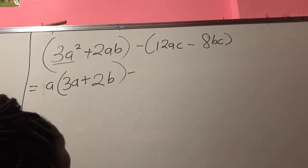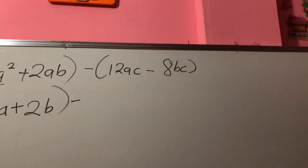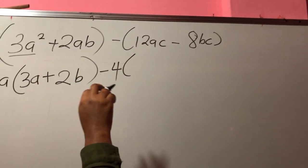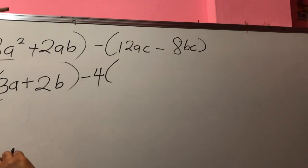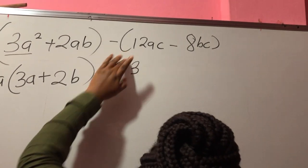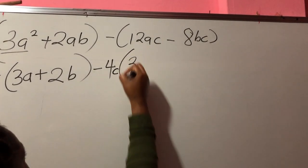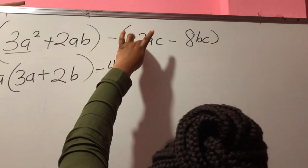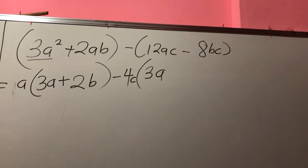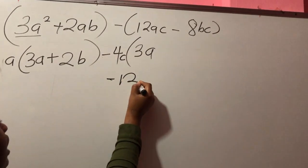Now let's come to the second group. My minus is outside. What is the factor common to them? The factor common to them is 4. I bring my 4 out. And the variable common to them is C, so I bring my C here. And 4 times 3A will give me 12. So you realize that negative 4C times 3A will give you a minus 12AC, just as it is in the question.